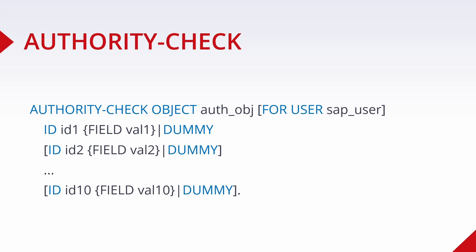Welcome to this video. In this video I want to talk about the very important ABAP statement authority check. With the ABAP statement authority check you basically check the authorizations or authorization objects for a specific SAP user, and only if the ABAP statement authority check is used within the ABAP program can you check the authorization. So you really have to be aware of checking authorizations, and I would like to explain this ABAP statement more closely within this video.